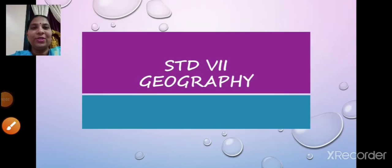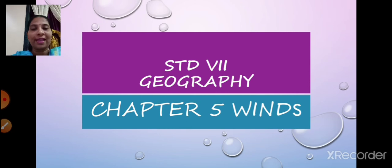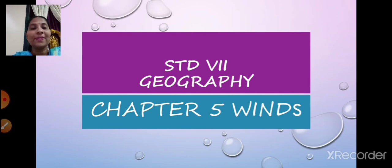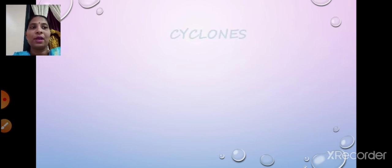Welcome back, students. Today we are going ahead with our third part of our fifth lesson in geography, that is winds. In our first part, we learned about the planetary winds — the westerlies, the easterlies and the polar winds. In our second part, we learned about the local winds, the land breeze, the sea breeze and the seasonal winds. In today's part, we will be concluding the lesson by learning about winds which are destructive — the cyclones.